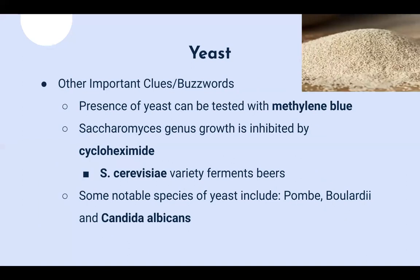Some other buzzwords for yeast: the presence of yeast can be tested with a compound called methylene blue. The Saccharomyces genus growth is inhibited by a compound called cycloheximide. Baker's yeast, also known as Saccharomyces cerevisiae, is the variety that helps ferment beers. Other notable species of yeast include Pombay, Boulardii, and Candida albicans — Candida albicans being the most famous and sometimes asked as part of a bonus at the regs level.